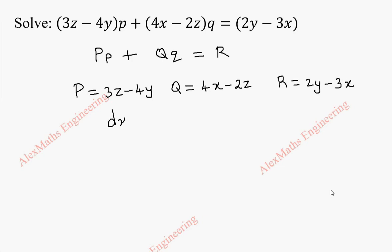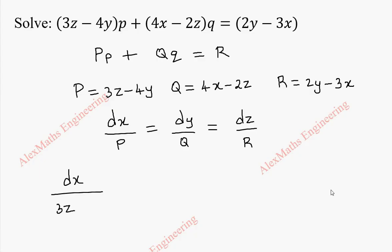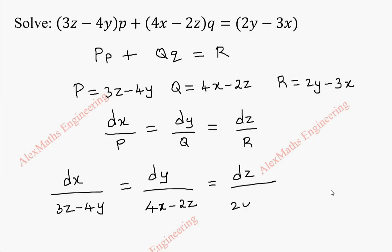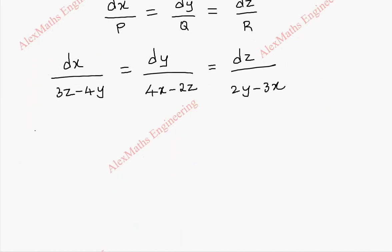To get the solution we have to solve dx by capital P equal to dy by capital Q equal to dz by capital R. Substituting, we get dx by (3z minus 4y) equal to dy by (4x minus 2z) equal to dz by (2y minus 3x). Now we are going to use Lagrange's multiplier.